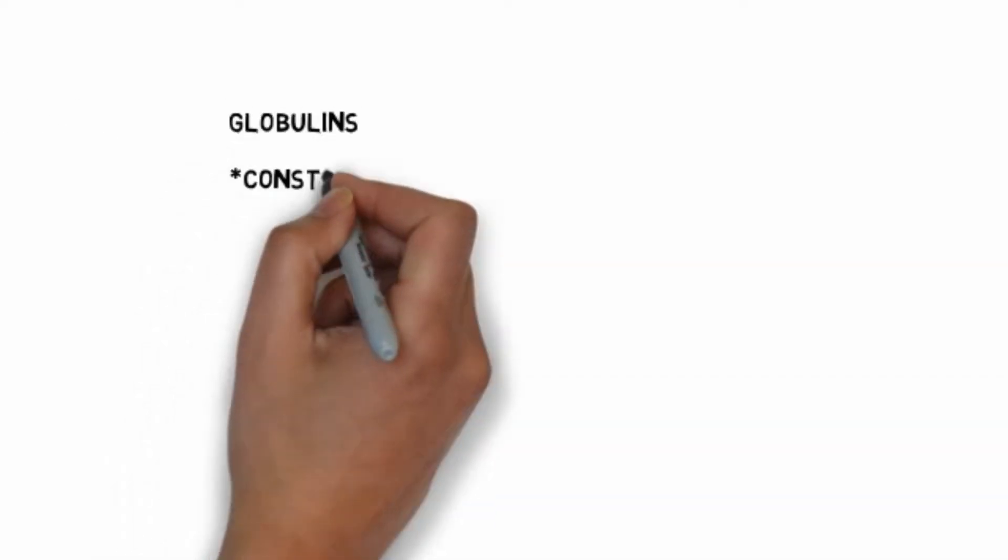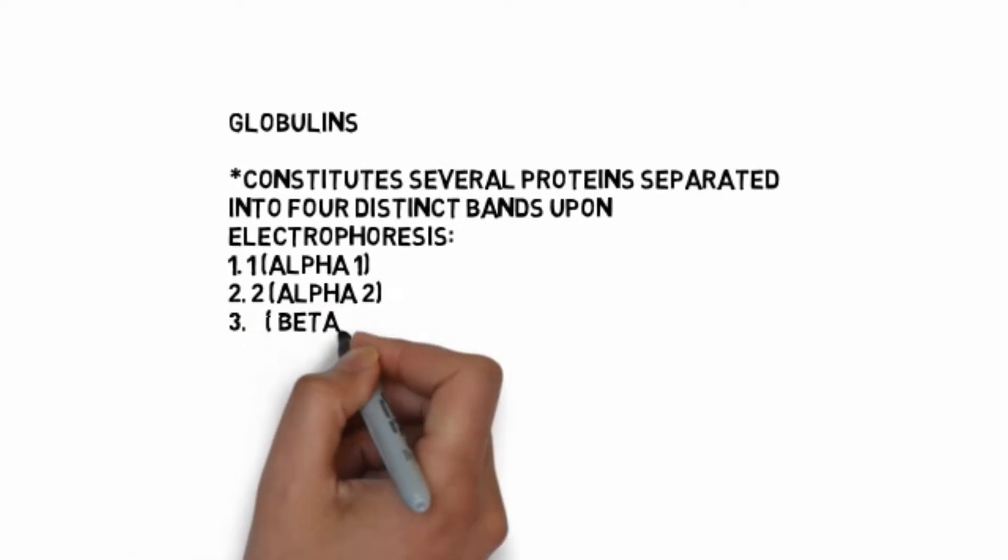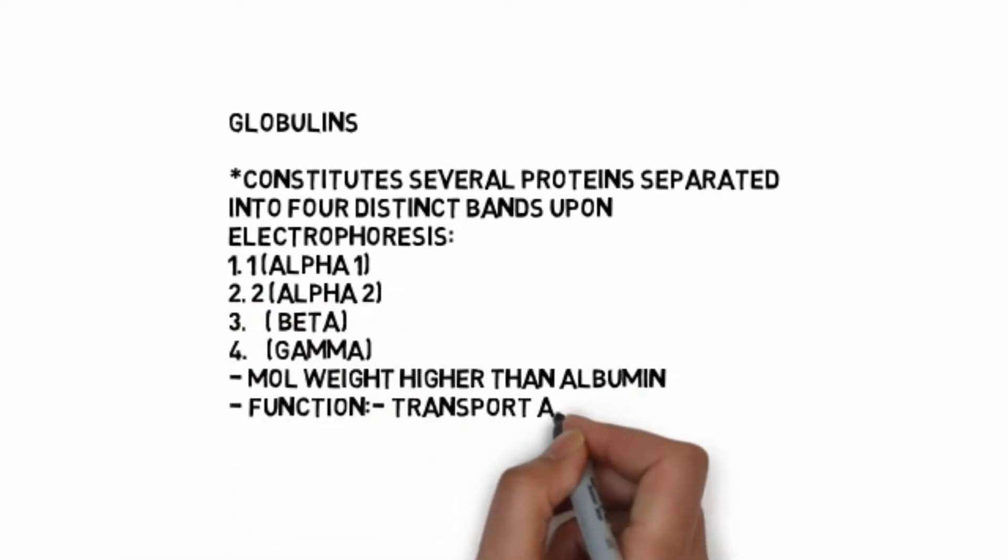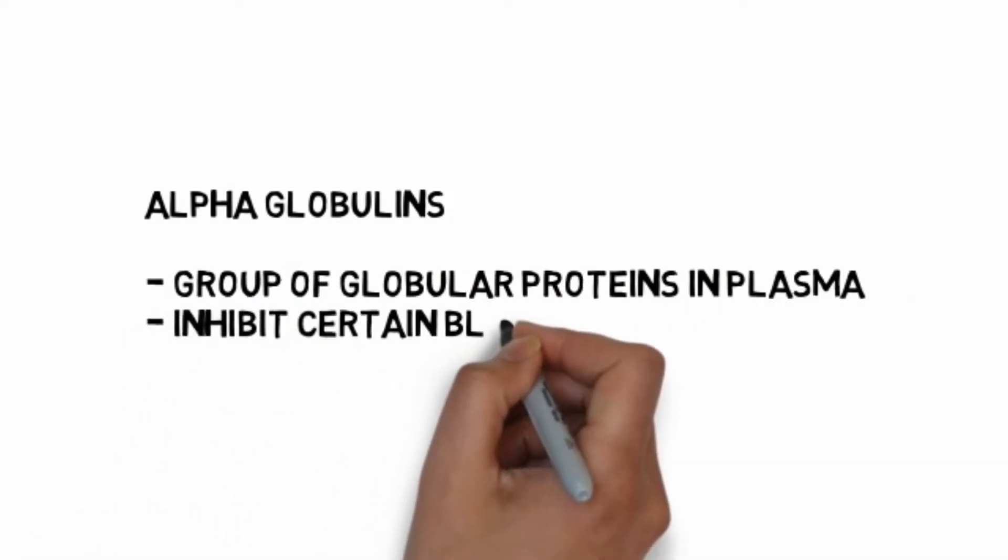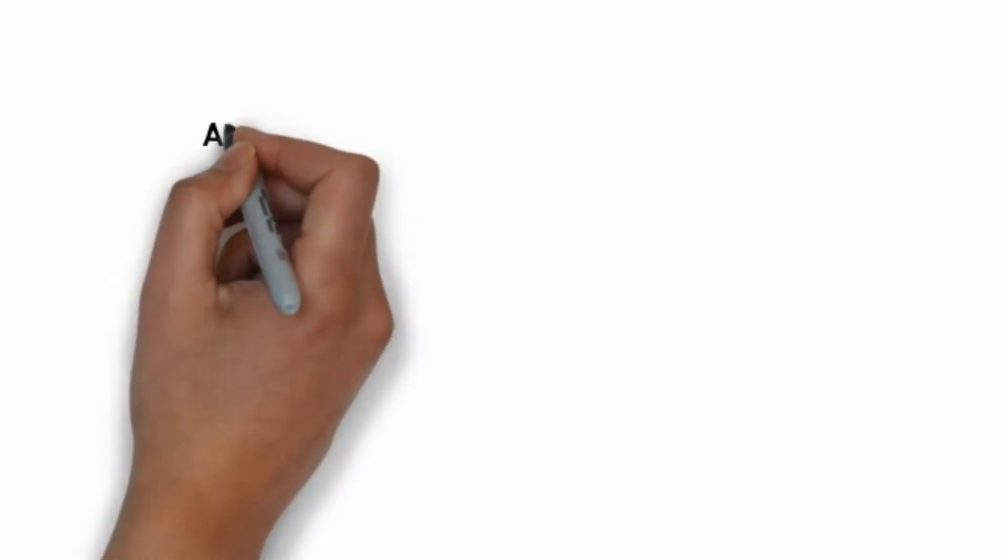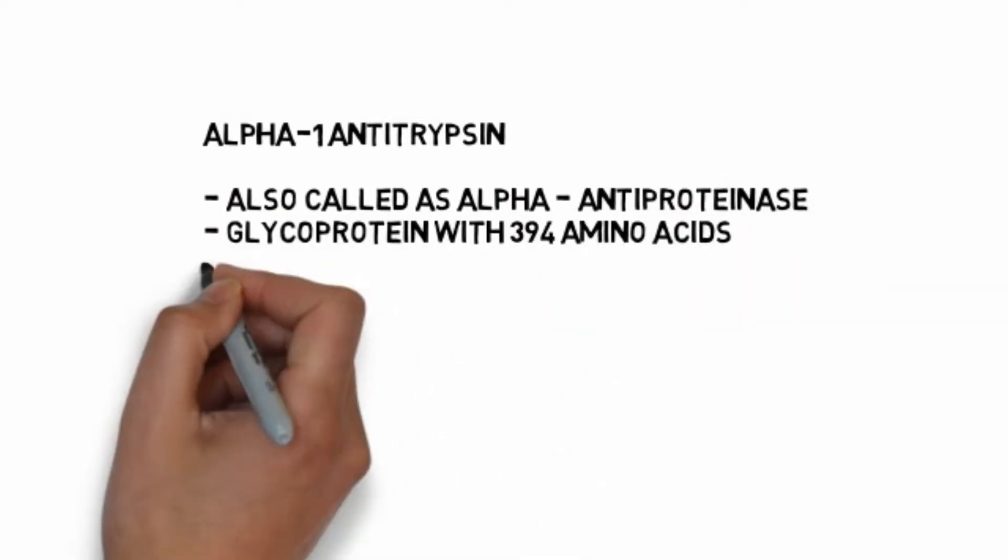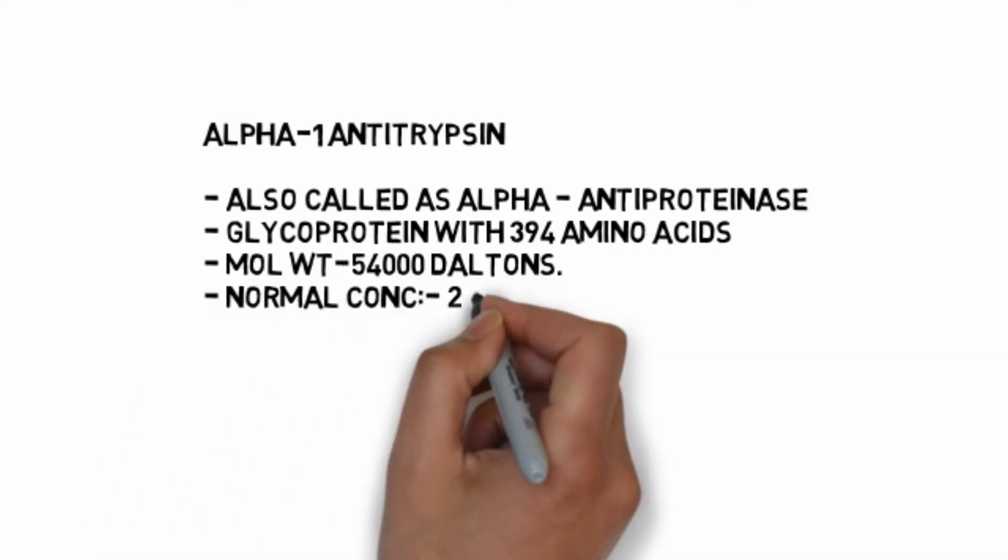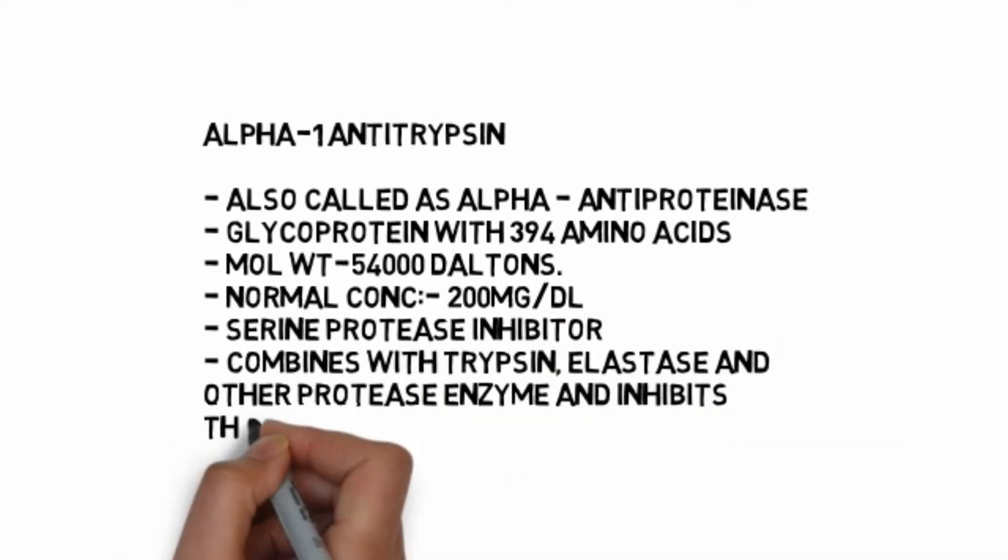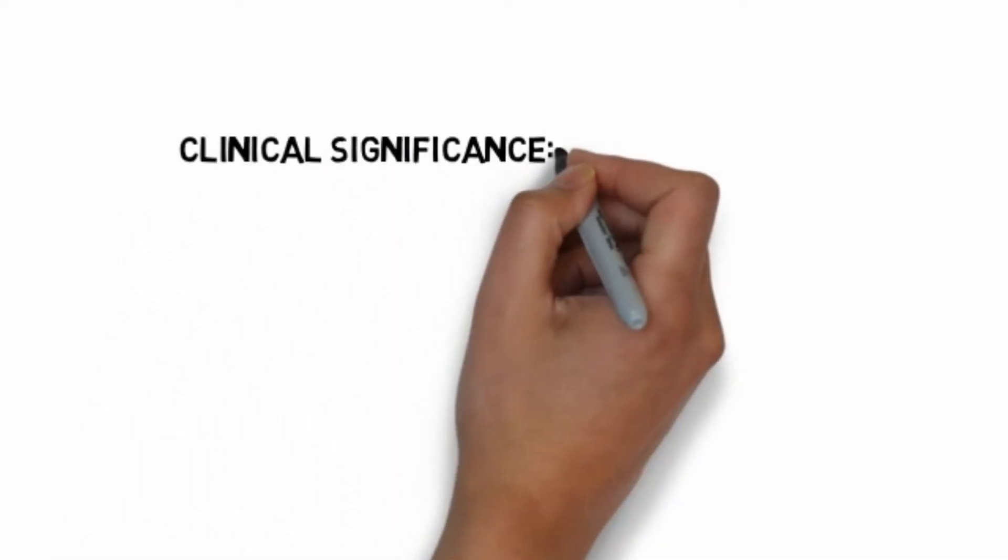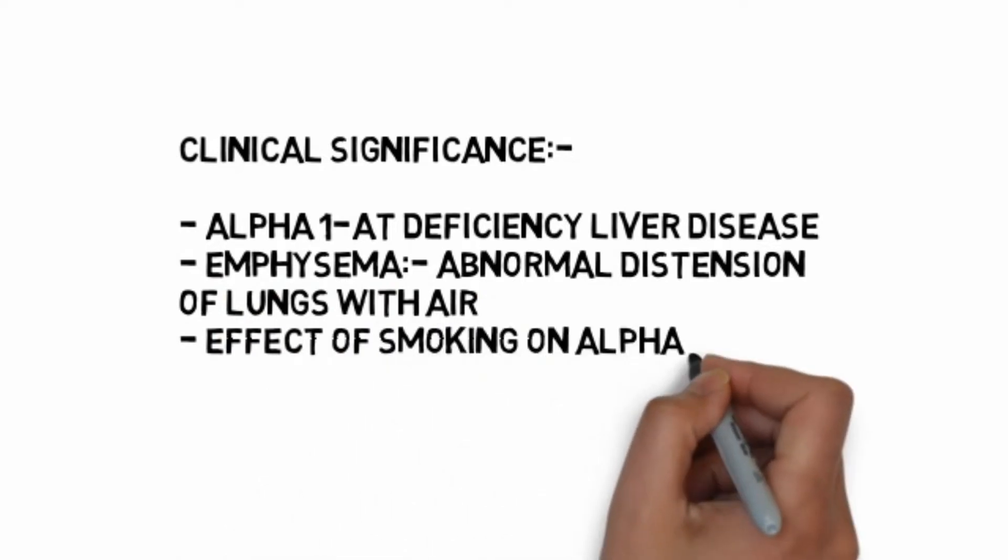Globulins constitute several proteins separated into four distinct bands: alpha-1, alpha-2, beta, and gamma. Molecular weight is higher than albumin. Functions include transport and immunity. Normal concentration is 2.6 to 3.5 grams per deciliter. Alpha-1 antitrypsin, also called alpha-1 antiproteinase, is a glycoprotein with 394 amino acids, molecular weight 54,000 daltons, normal concentration 200 mg per deciliter. It's a serine protease inhibitor that combines with trypsin, elastase, and other protease enzymes and inhibits their activity. Clinical significance: alpha-1 antitrypsin deficiency causes liver disease and emphysema, abnormal distension of lungs with air. Effect of smoking on alpha-1 antitrypsin coupled with genetic deficiency predisposes to emphysema.